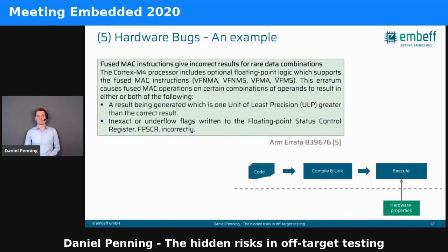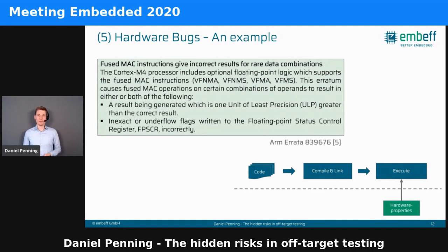The last example is hardware bugs. Fortunately these are really rare, but even a very popular microcontroller like the Cortex-M4 has hardware bugs inside the floating point unit. If you take certain arguments and execute them with an FPU instruction, you get inexact or wrong underflow results. If you look at the errata of your target hardware microcontroller, you will find that all of them have bugs — most deal with peripherals like a bug in the DMA controller or SPI — but even the core itself has bugs. You can only catch these if you take your unit tests to the target and run them on-target, because hardware properties affect the results.